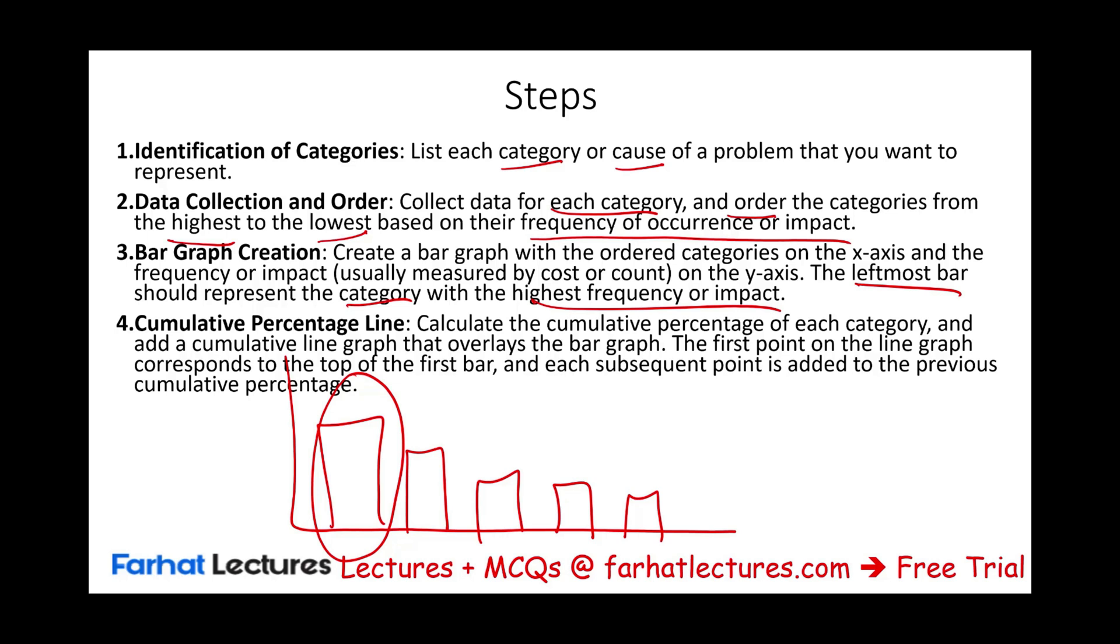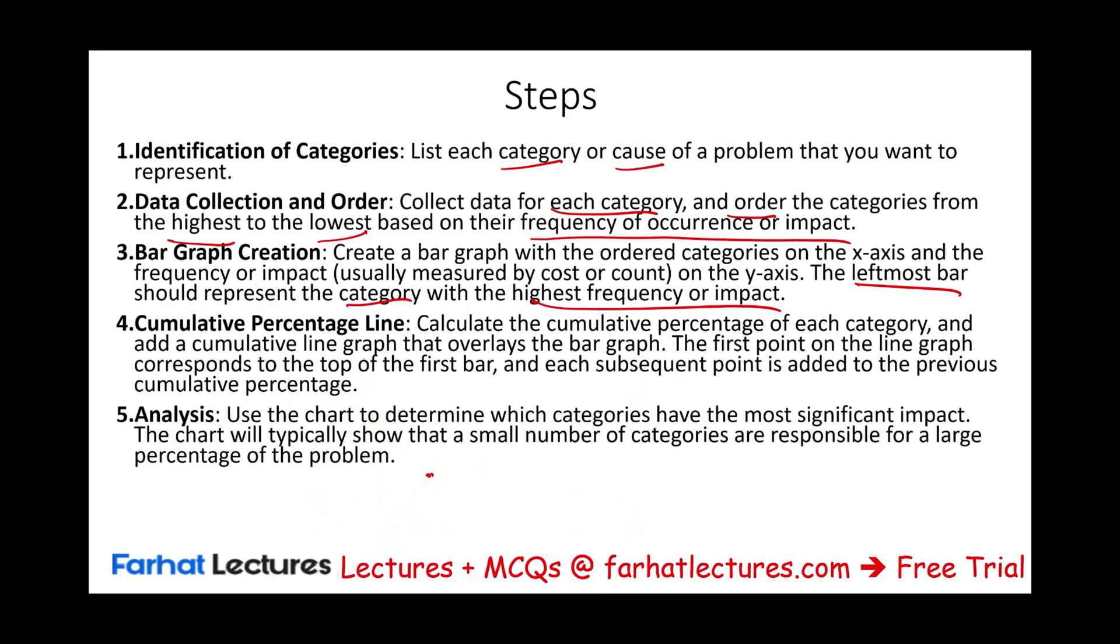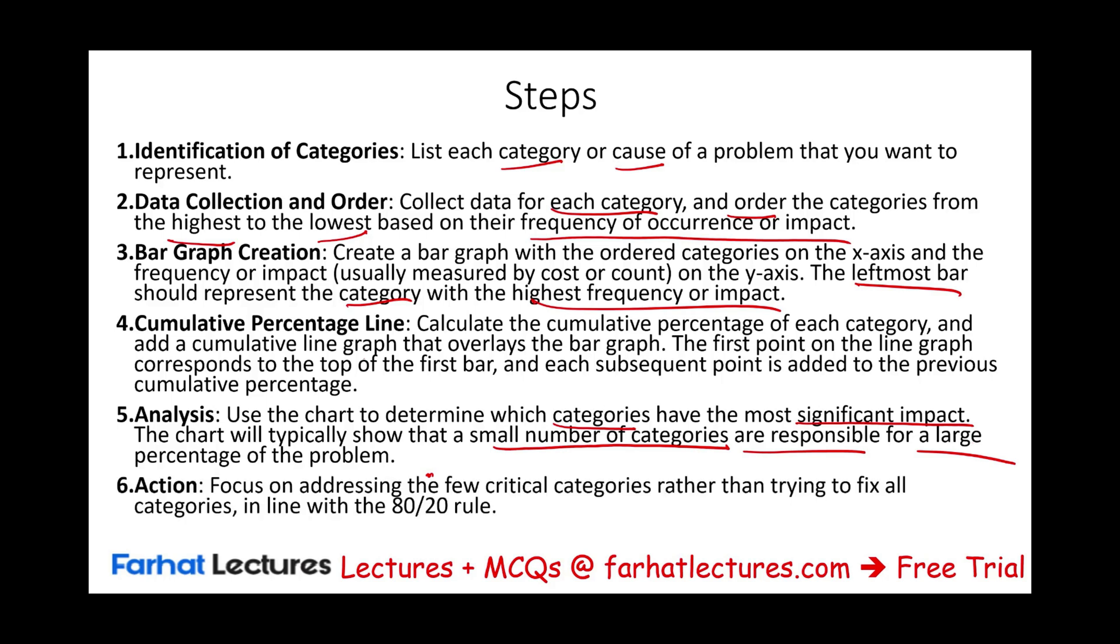Then you're going to compute a cumulative percentage line. Calculate the cumulative percentage of each category and add the cumulative line graph that overlays the bar graph. The first point on the line graph corresponds to the top of the first bar, and each subsequent point is added to the previous cumulative percentage. Then analyze the chart. Use the chart to determine which categories have the most significant impact. This chart will typically show that a small number of categories is responsible for a large percentage of the problem, and this is where the 80-20 rule comes into place.